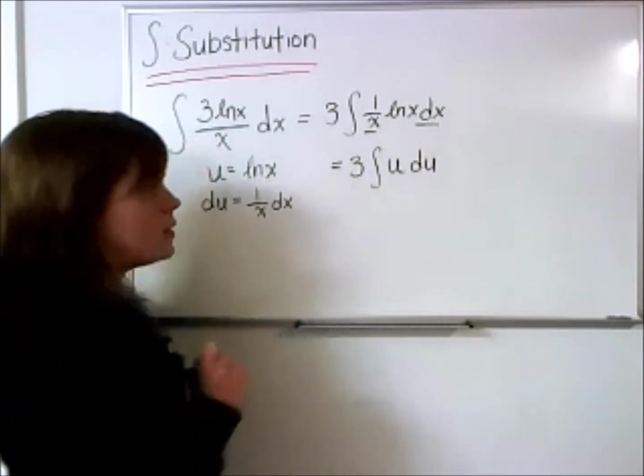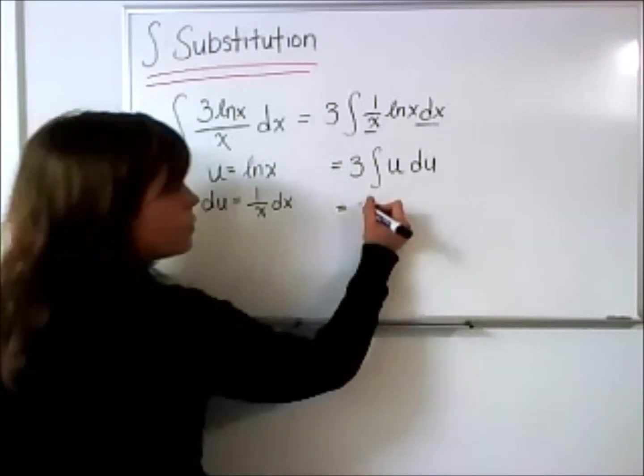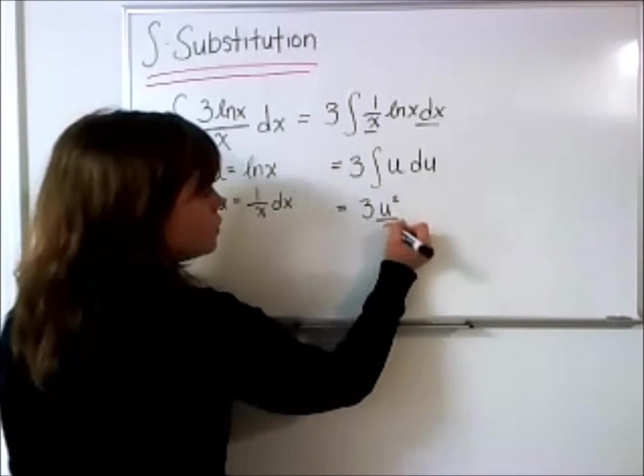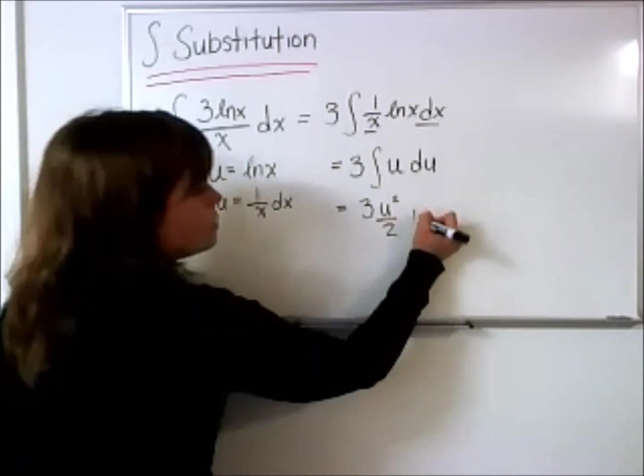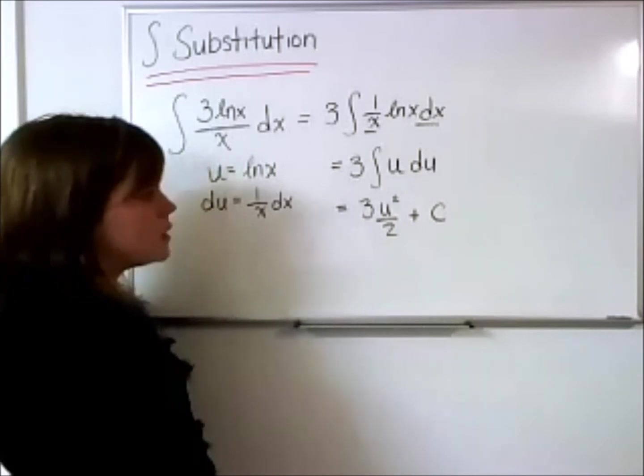We know the antiderivative of u, again, using that reverse polynomial, will be 3u squared all over 2, and plus c, because this is an indefinite integral, we can't forget our constant.